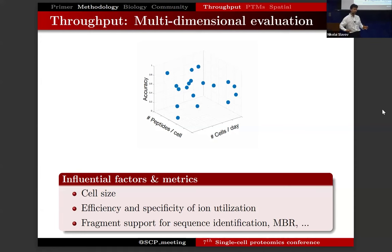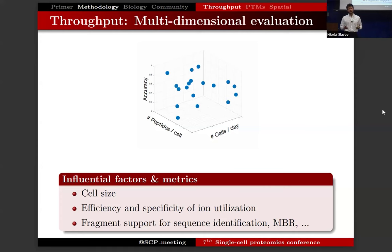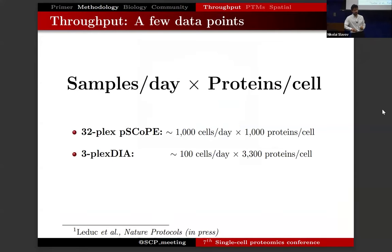As we speak of throughput, it's also very important to keep in context whether we are identifying sequences based on robust fragmentation of many fragment ions, or using match-between-runs based only on MS1 information. I wanted to highlight this complexity of benchmarking and evaluating throughput. Nonetheless, I want to give you a low-dimensional snapshot projection of some types of analysis that we do in my lab and what the throughput is.